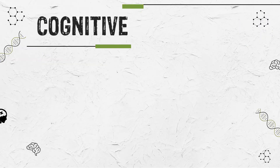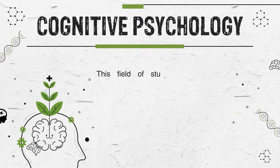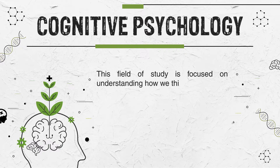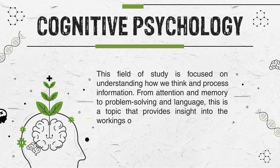Number 7 is cognitive psychology. This field of study is focused on understanding how we think and process information. From attention and memory to problem solving and language, this is a topic that provides insight into the workings of the human mind.